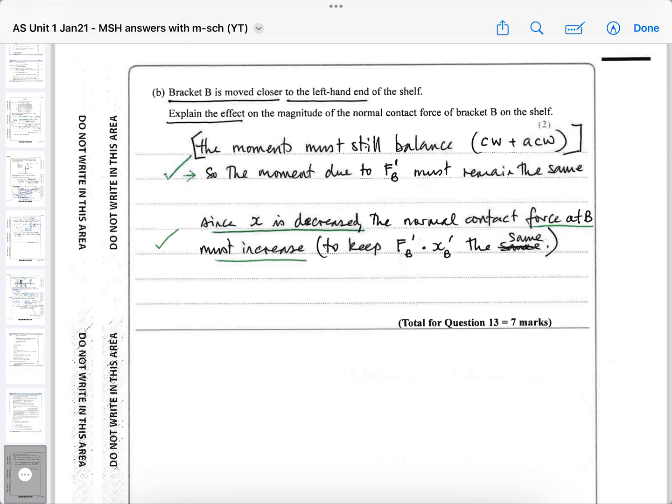If bracket B is moved closer to the left hand of the shelf, that's the support, explain the effect of the magnitude of the normal contact force. So how will it change the reaction, the size of the force if bracket B is moved closer to the left hand end? Well, the moments must still balance, clockwise and anti-clockwise. That's what we have to assume. So the moment due to F_B must still remain the same to keep the whole thing balanced.